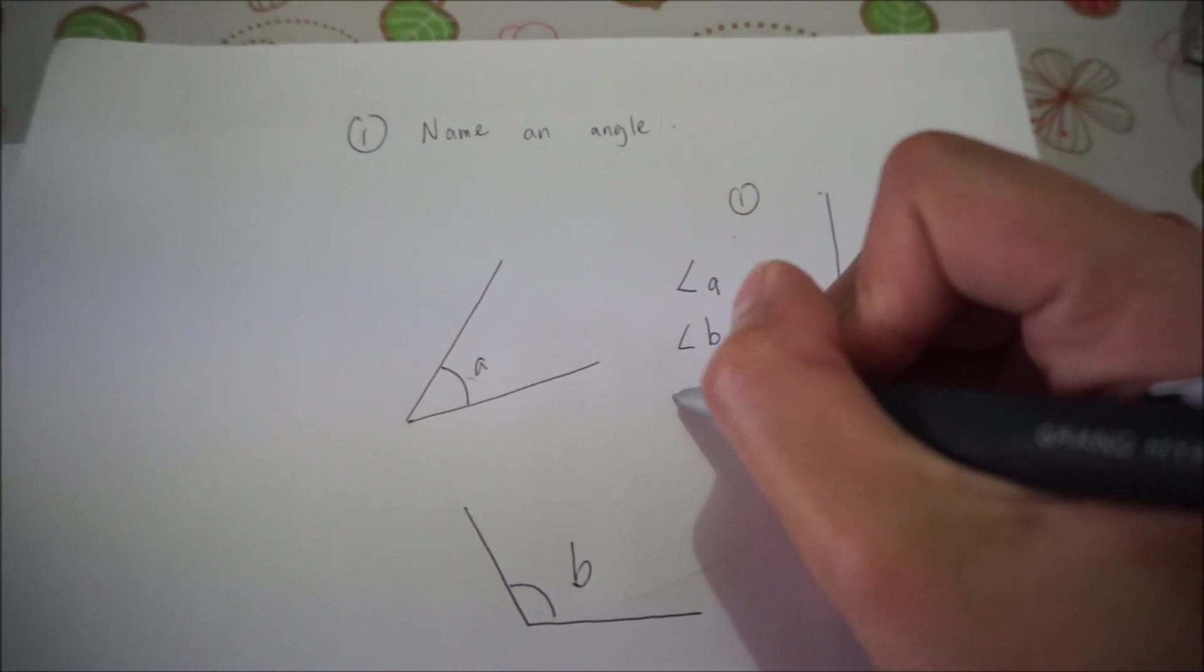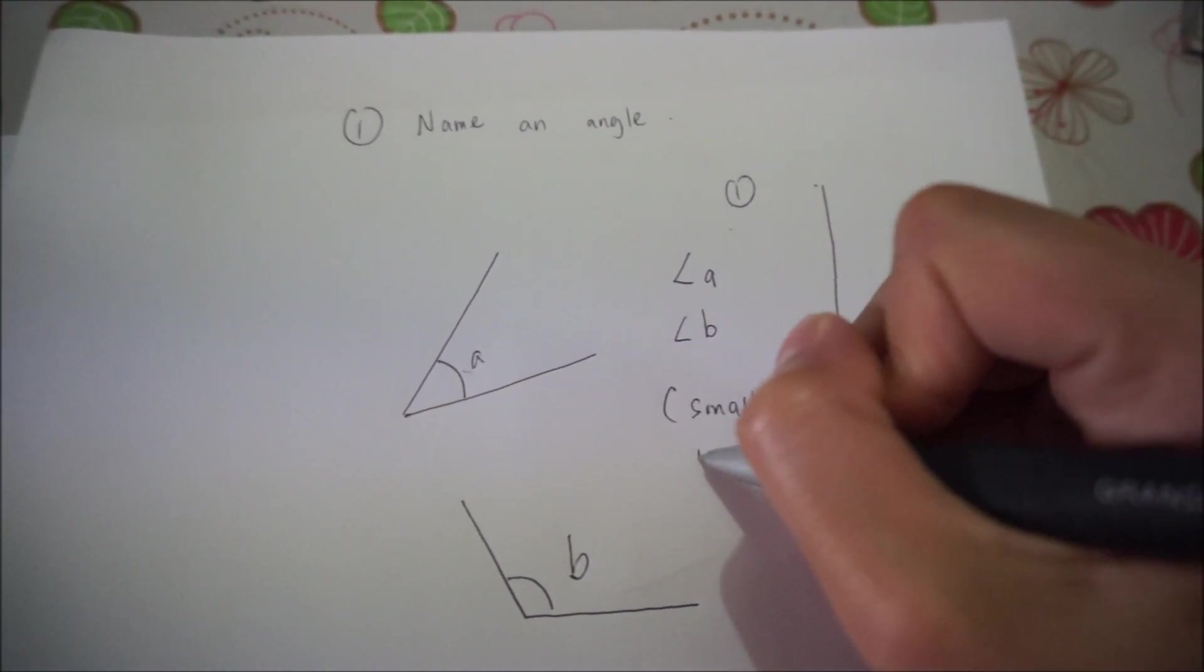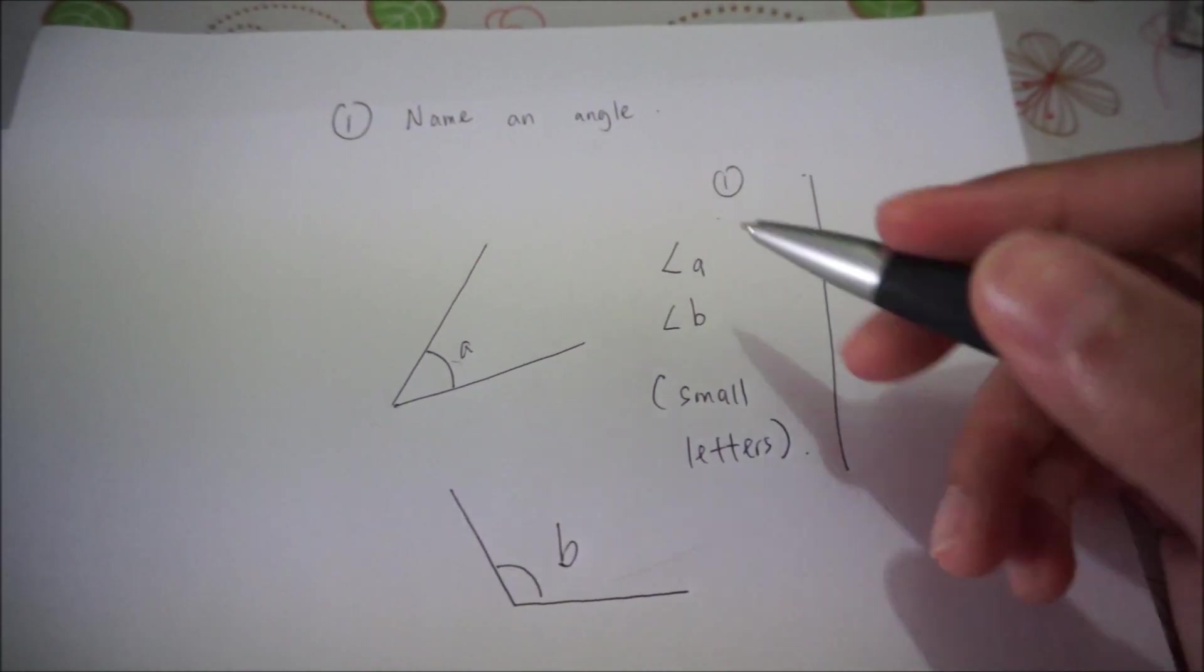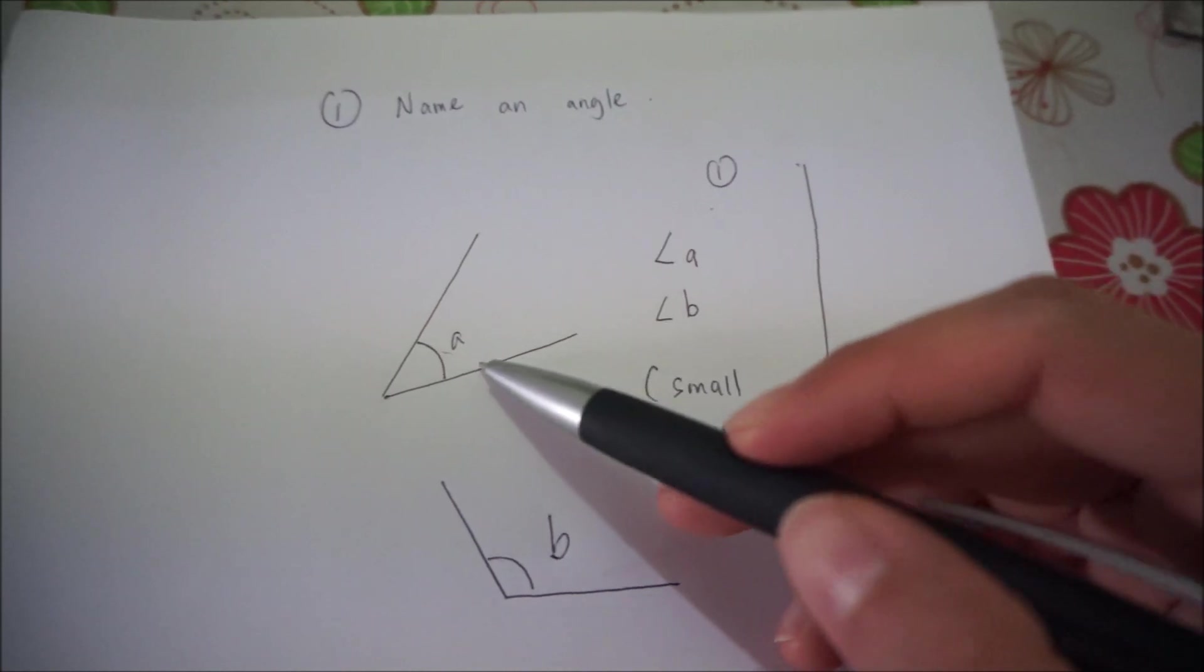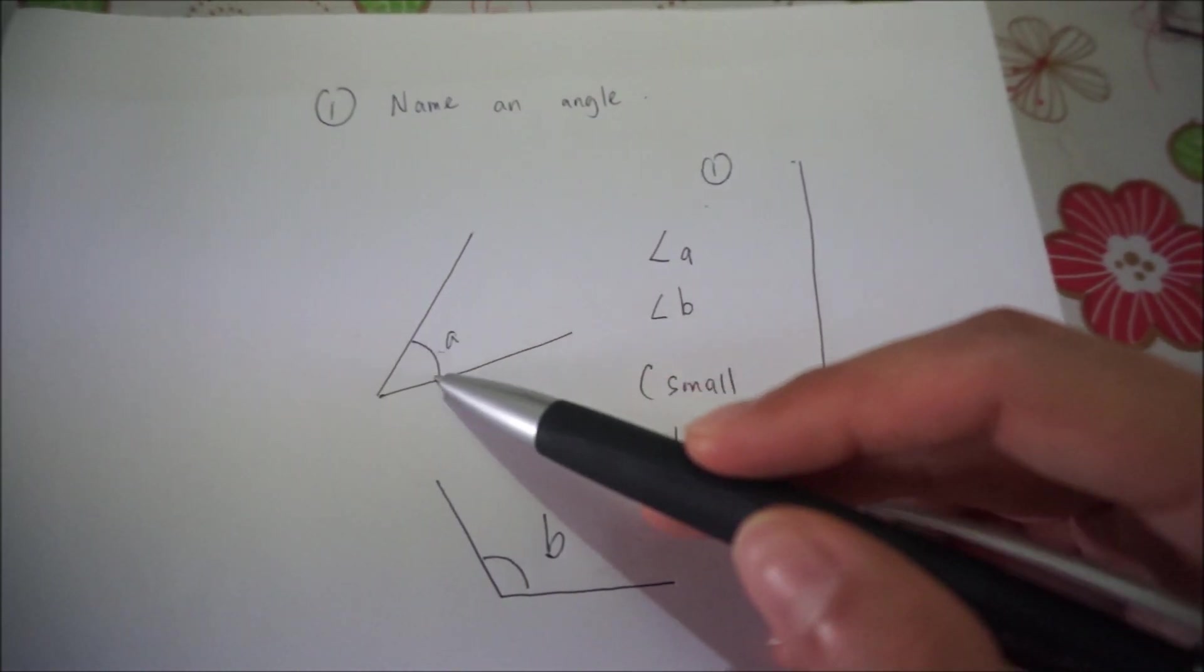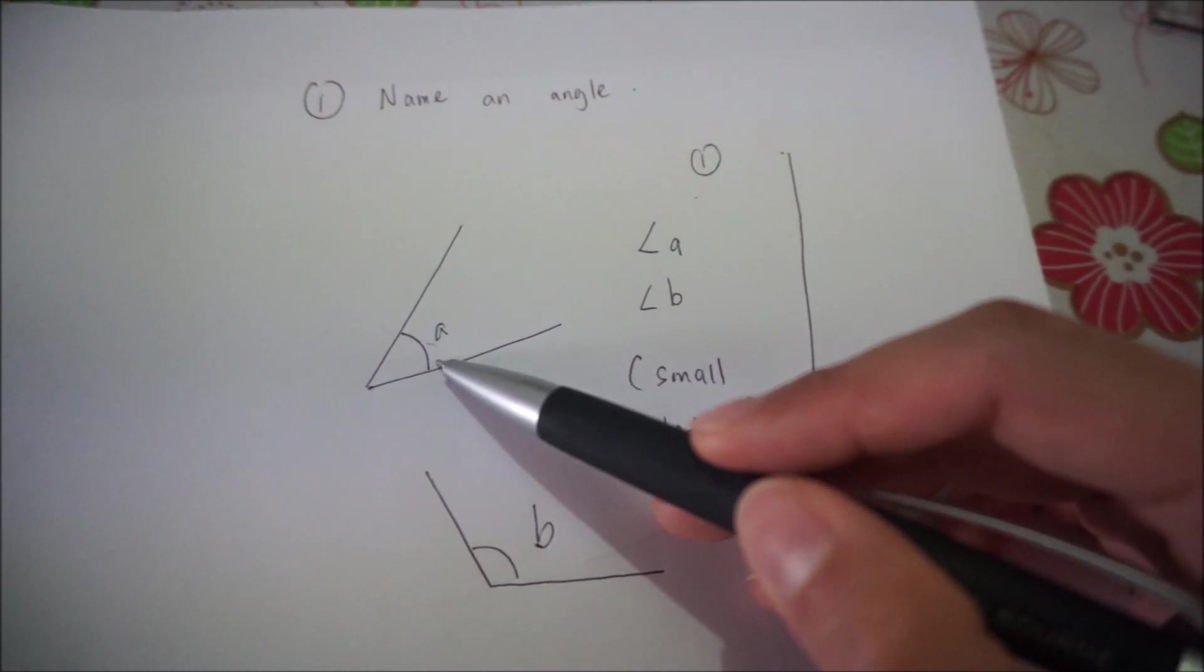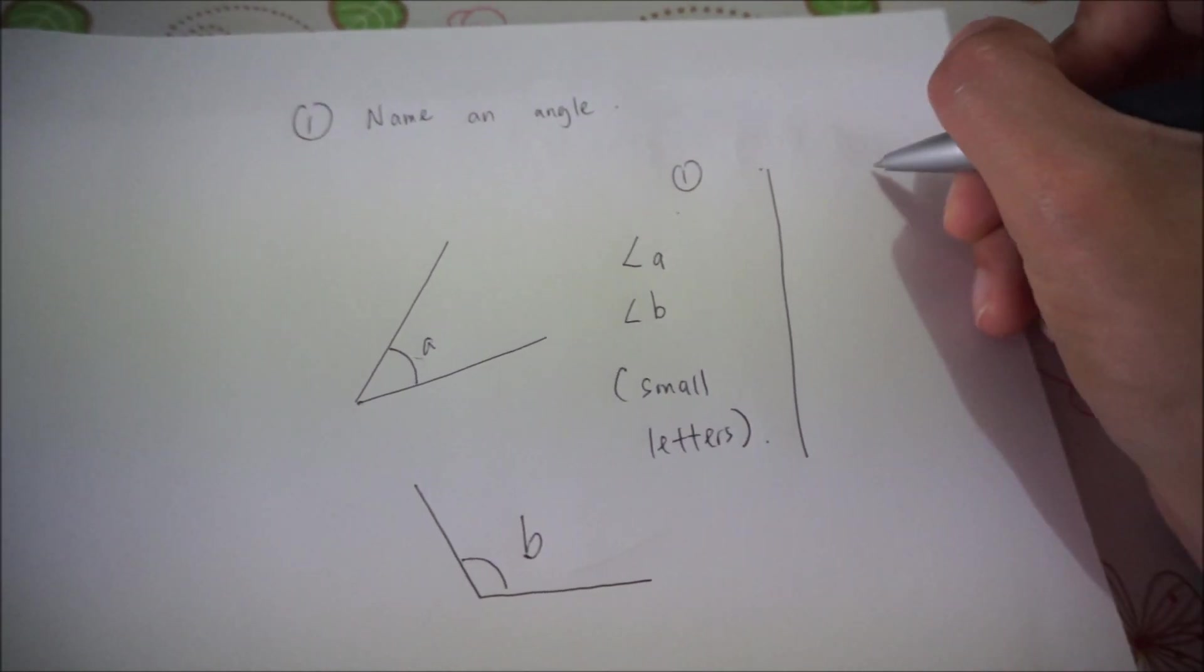Now this is written in small letters. So this is the first way of naming angles. The angle is directly at the angle here. The alphabet is directly at the angle here.